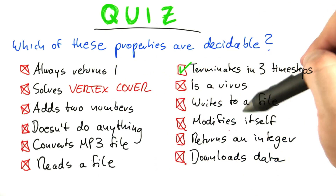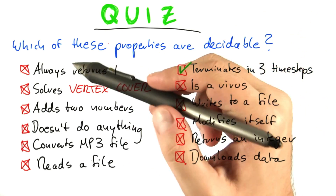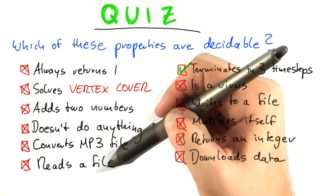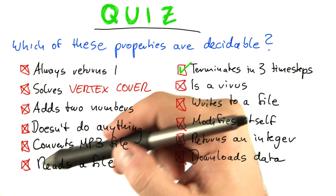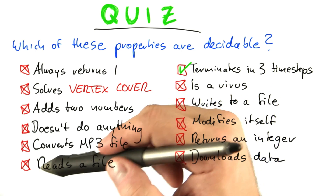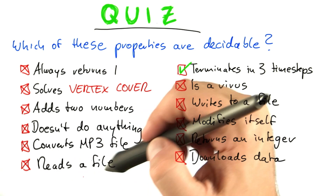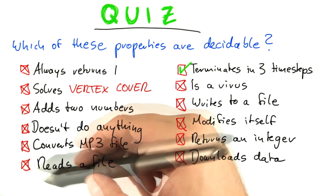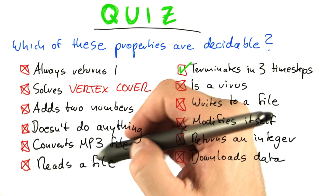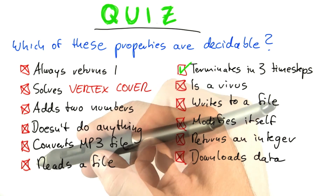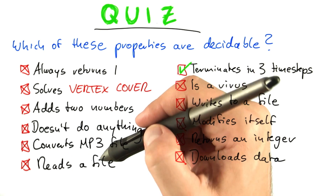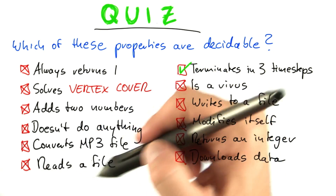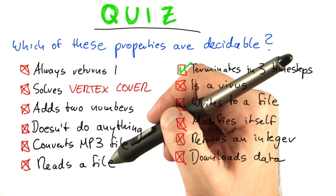Of course, the question is whether this has any practical relevance. For example, for reading a file — for most programs you will be able to decide if they ever read a file or not. On the other hand, if you look at general software testing, this is an interesting question from a perspective of code coverage. If you could decide whether a program reads a file, and you want the program to read a file, that would tell you something about the correctness of that program.